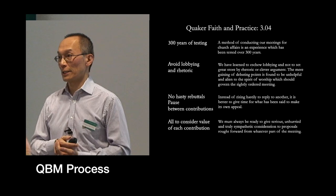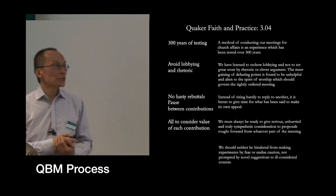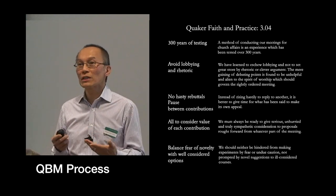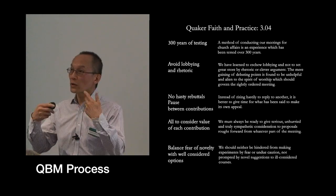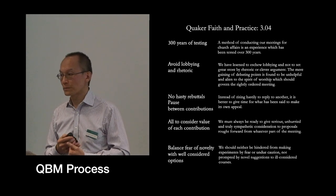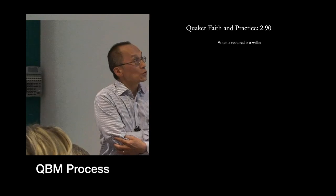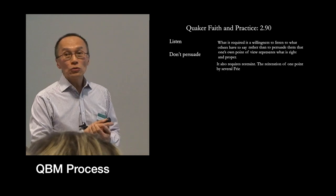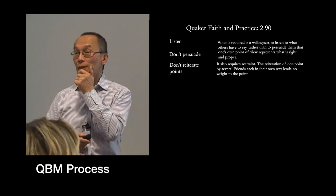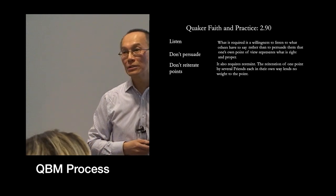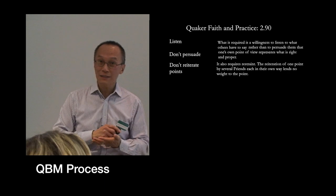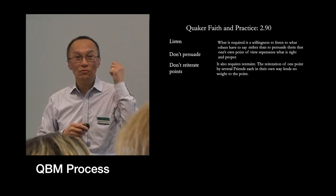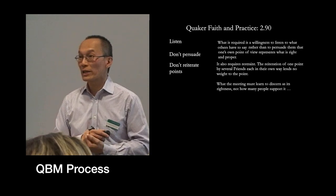This is the role of the silence. We're also asked to balance fear of novelty with a well-considered option. If something's novel, we might have a gut reaction against it, but we're asked to try and keep in check those kinds of reactions. Section 2.9 also talks about the importance of listening, not persuading, and not reiterating points which have previously been made — something which typically happens in many meetings, where particular people want to restate their points many times, like a battering ram to persuade everybody else.